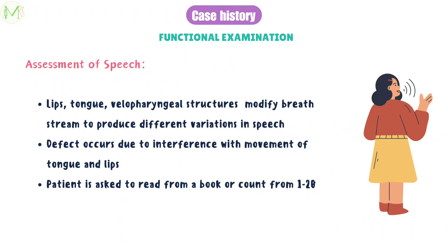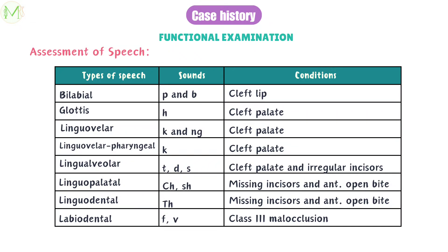Now let's move on to assessment of speech. Speech is a learned behaviour, and lips, tongue, and velopharyngeal structures modify the breath stream to produce different variations in speech. Certain malocclusions may cause defects in speech due to interference with the movement of tongue and lips. It should be observed by conversing with the patient or asking them to read aloud or count from 1 to 20. Patients with tongue thrust and cleft palate may have a nasal tone. In cleft lip patients, there may be variation in P and B sounds — bilabial type of speech.